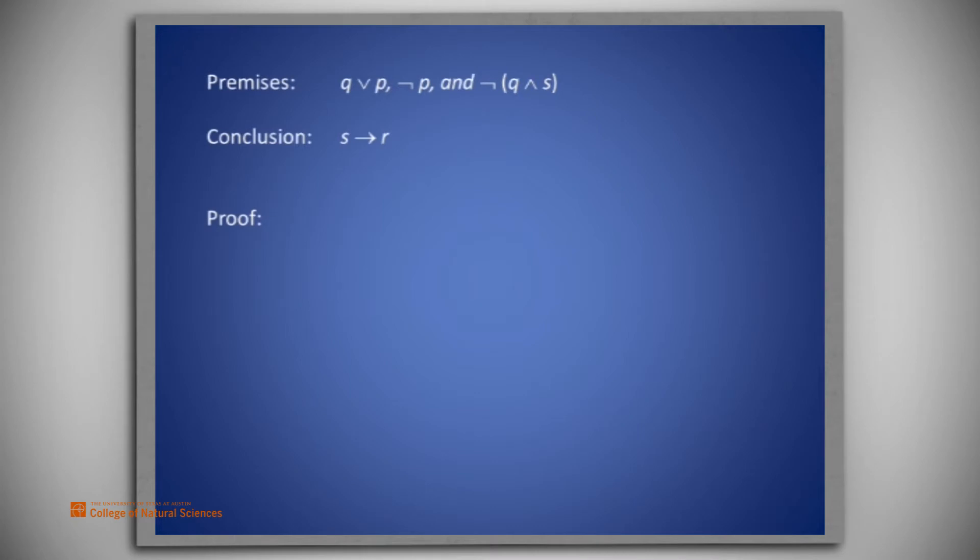However, an alternative proof of the same theorem using contradictory premises is found in a separate video. The proof in that video also uses conditional premises. This version avoids conditional premises.